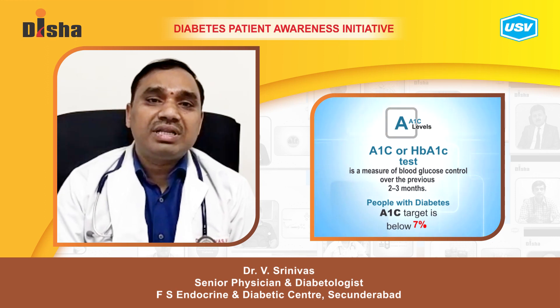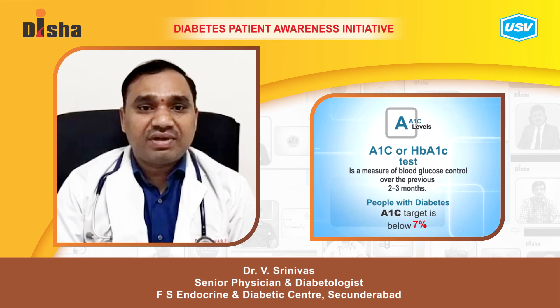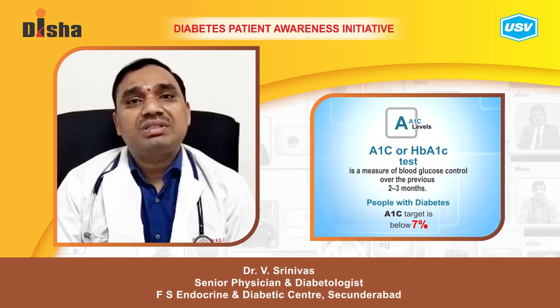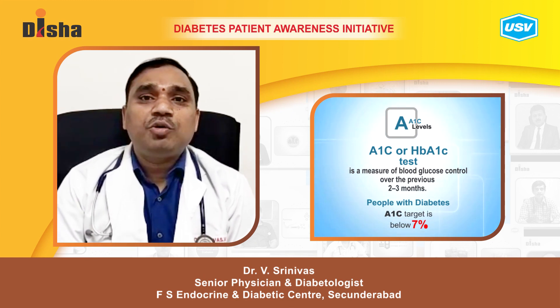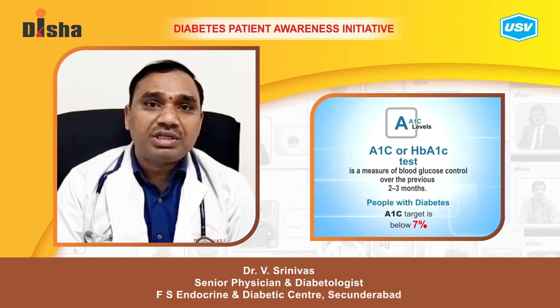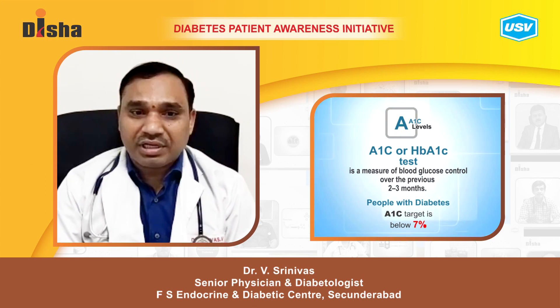For younger people, keeping HbA1c at 7 or between 6.5 and 7 allows strict control of blood sugars, which will help to prevent complications or prevent the progression of existing complications.